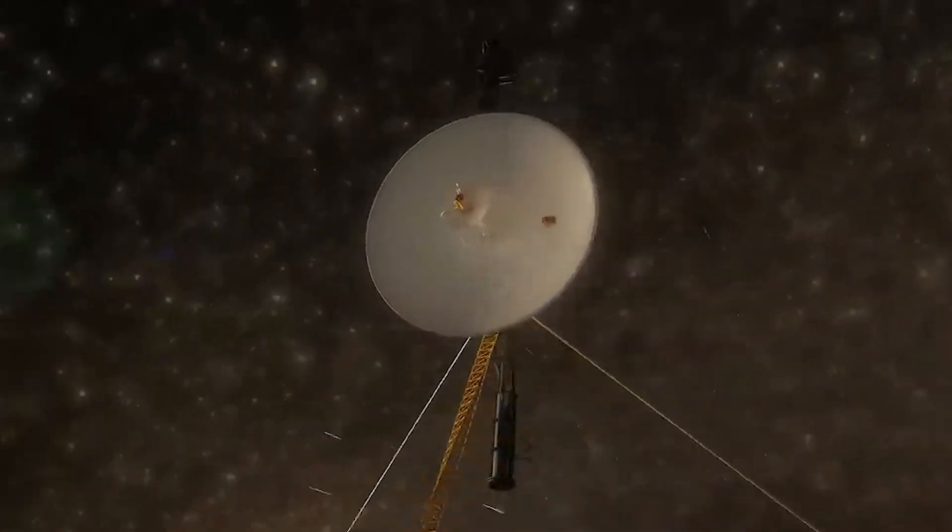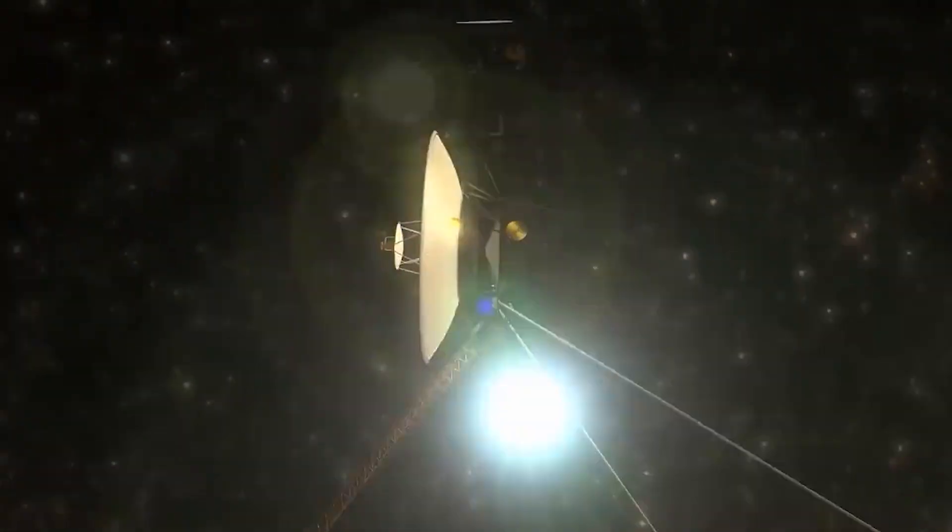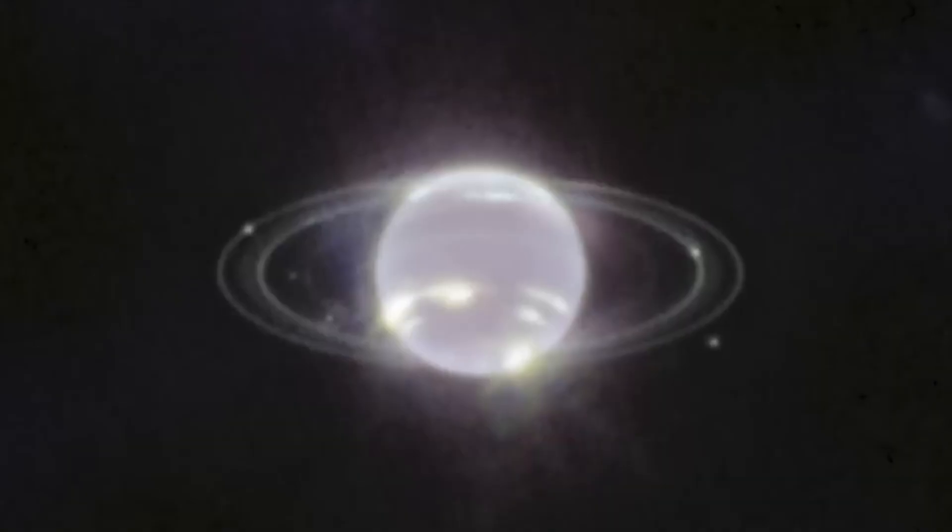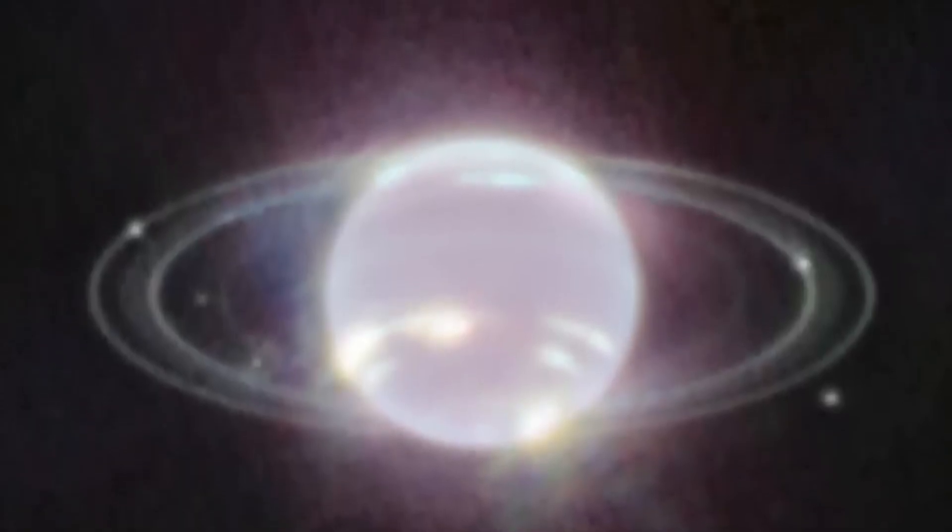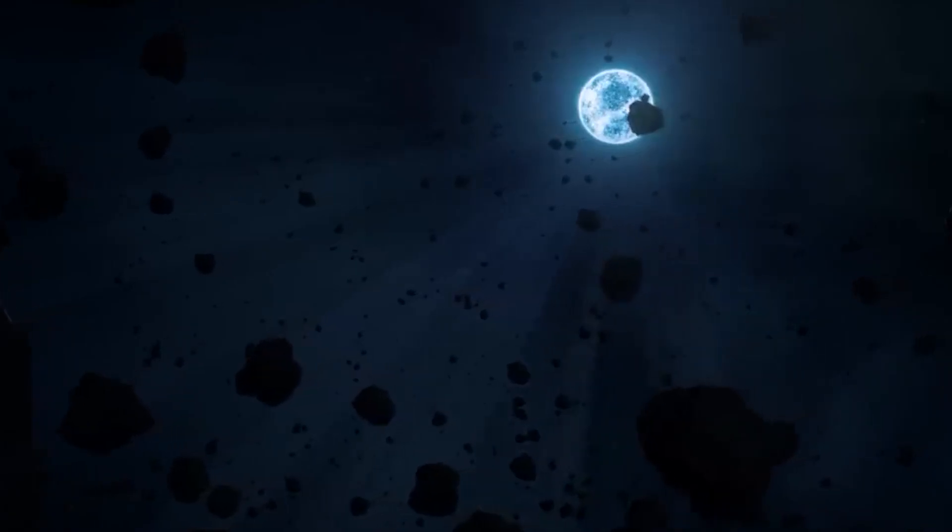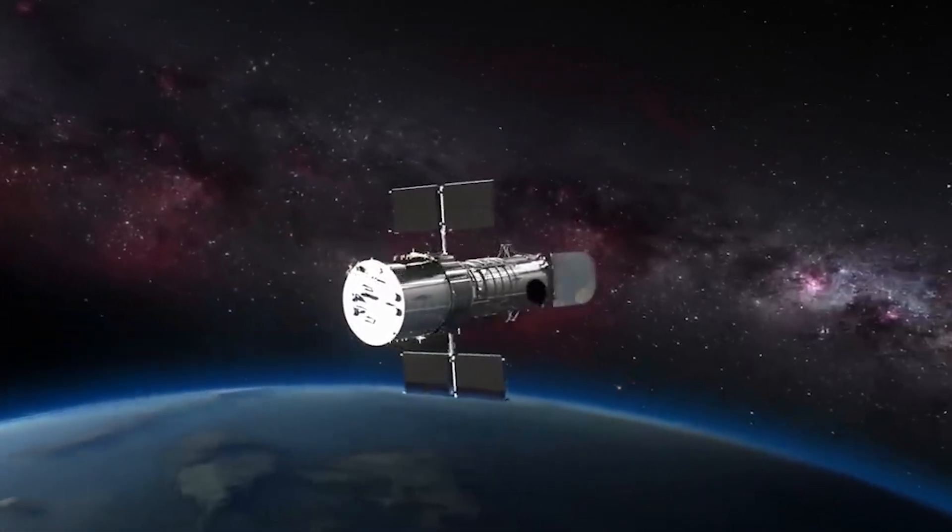Decades later, in 2022, the James Webb Space Telescope captured new, detailed images of these rings, showcasing their structure and composition more clearly than ever before. Neptune's rings are made up of dust and ice particles, which reflect very little sunlight, making them difficult to observe without advanced instruments.